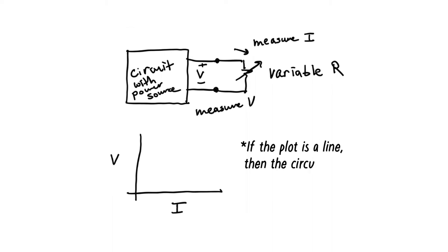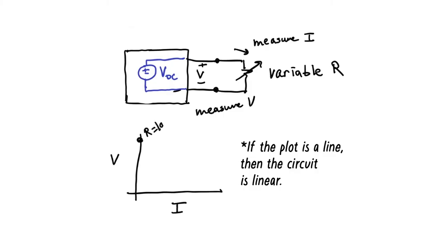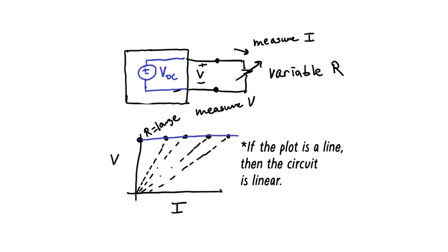Linear circuits are really important, and I'll show you in a moment why. Let's consider what would happen if my black box contained an ideal voltage source. When I have the variable resistor set at infinity, I would measure the voltage source. As I start to change the resistance, each point represents a different resistor because the slope is changing in the V over I plot. Then if I connect all the dots, I'll end up with a straight line. Because this line is flat, I can say that what's inside my black box is a DC voltage source.